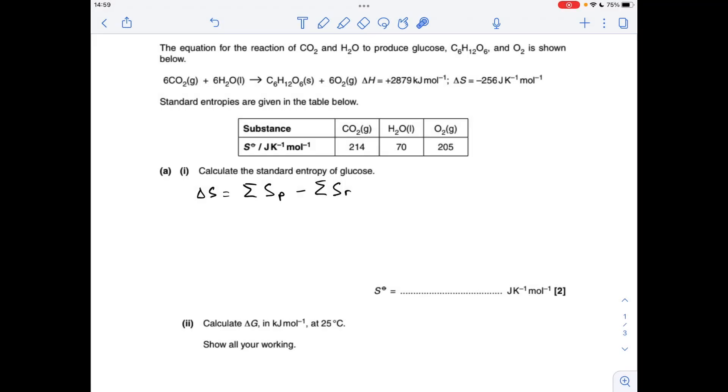Okay, so first part here, we've got to calculate the standard entropy of glucose, so that's one of the products of the reaction. We've got the delta S value, so we're going to use delta S equals the sum of the entropies of the products minus the sum of the entropies of the reactants to find a value for the glucose.